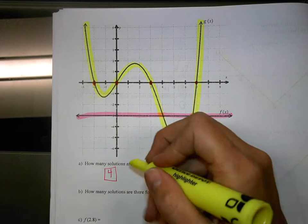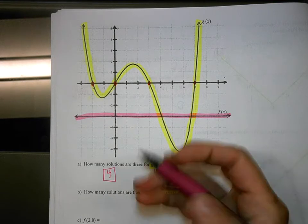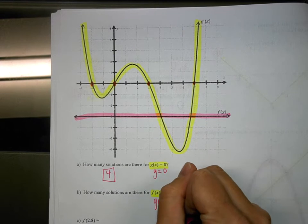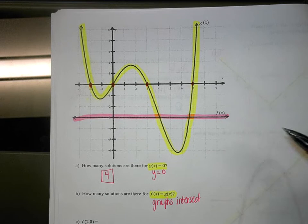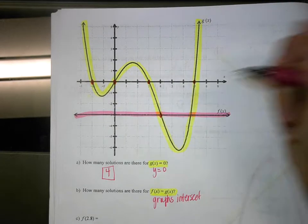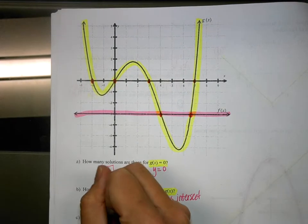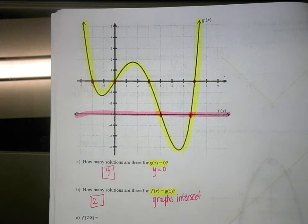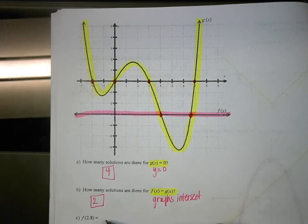The next question asks how many solutions are there for f of x equals g of x. Remember, f of x equals g of x is where the graphs intersect. Looking through here, we need to see how many times the graphs intersect. We can see the two graphs intersect at one place and then one more point, so there are two solutions.